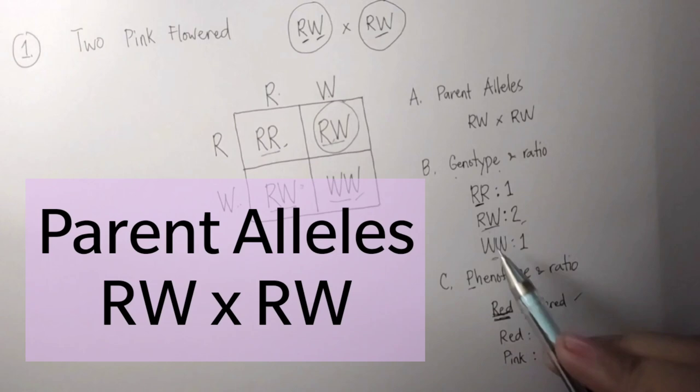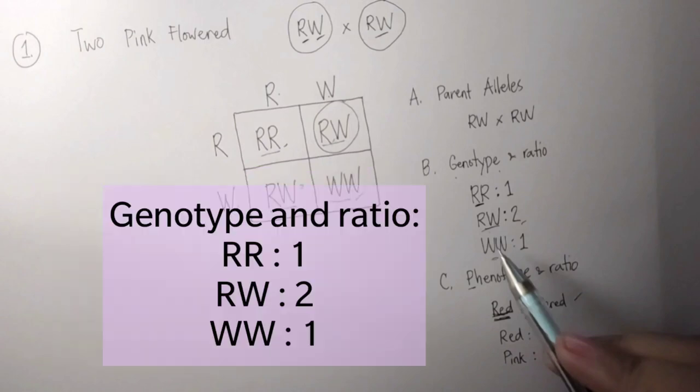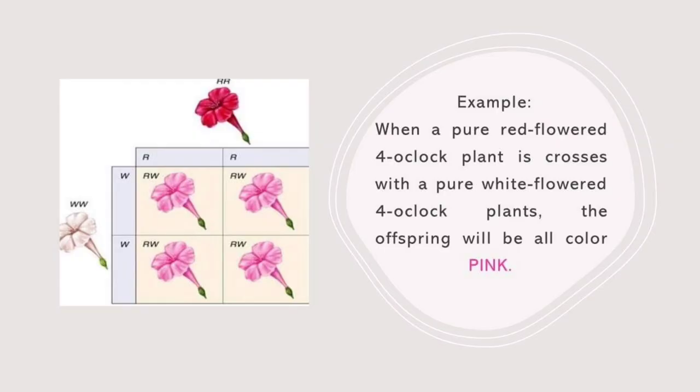Here's our final answer. Letter A — parent alleles: RW crossed with RW. For phenotype and ratio: red is 1, pink is 2, and white is 1. For genotype and ratio: RR is 1, RW is 2, and WW is 1. And that's all for today. Now it's your turn to answer problems number 2 and number 3. Enjoy learning!